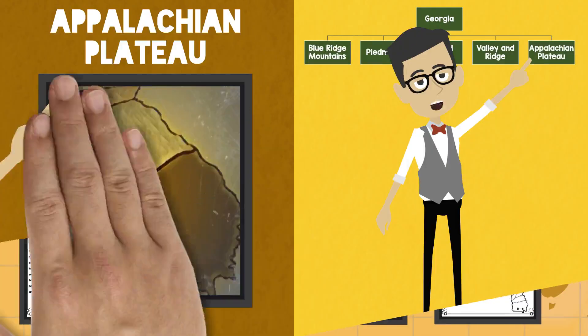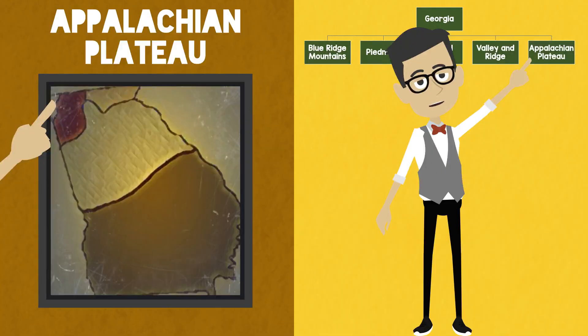The Appalachian Plateau is the smallest region. It is in the northwestern corner of the state. In the Appalachian Plateau, you will find mountains and woods.